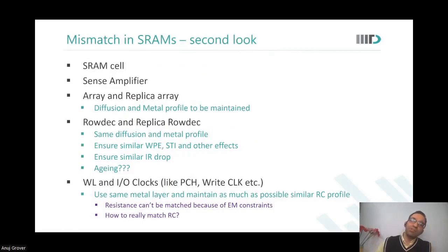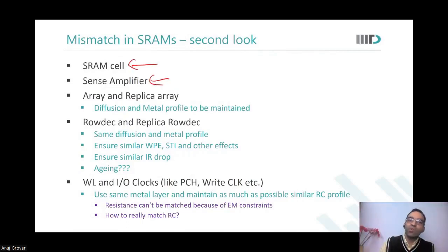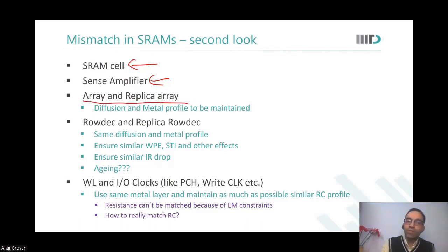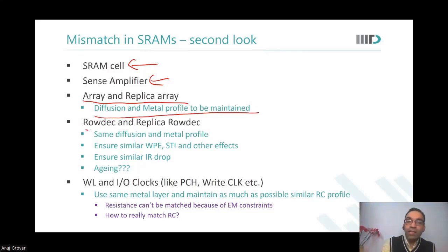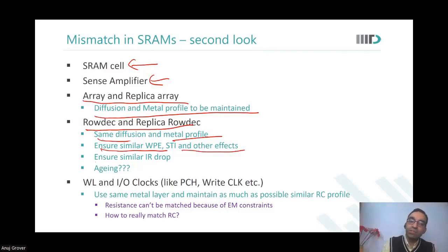We are talking about the importance of matching and mismatch at various levels. The replica array and array should be matched — the diffusion and metal profile has to be maintained. Row deck and replica row deck should be matched with the same diffusion and metal profile, showing similar WP, STI and other effects, and similar IR drop.